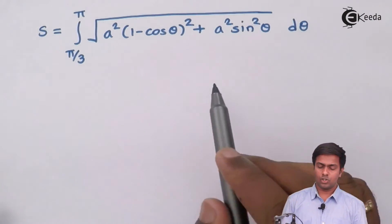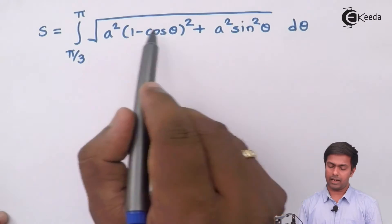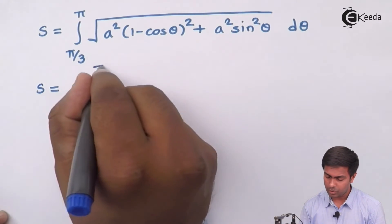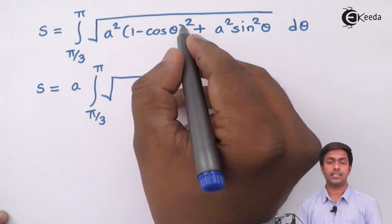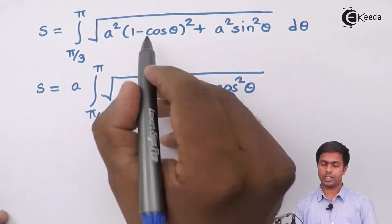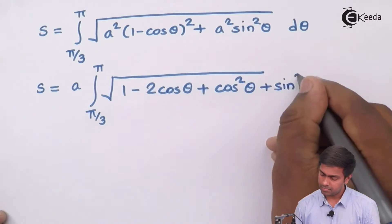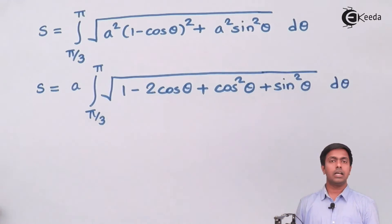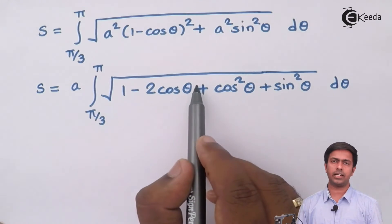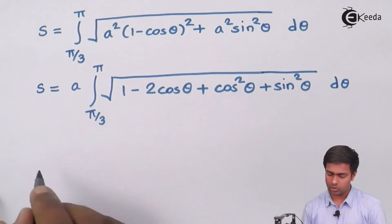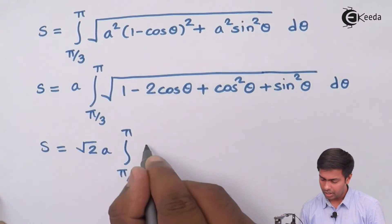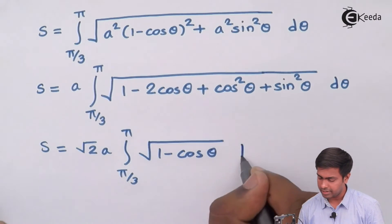Now we simplify. From the two terms inside the root, I can take a squared common, so root of a squared equals a comes outside. Expanding (1 minus cos theta)² gives 1 minus 2 cos theta plus cos squared theta. Adding sin squared theta: sin squared theta plus cos squared theta equals 1, so 1 plus 1 gives 2. Therefore we get 2 minus 2 cos theta inside the root. Taking 2 outside the root gives root 2. So S equals root 2 times a, integrated from pi/3 to pi of root(1 minus cos theta) dθ.